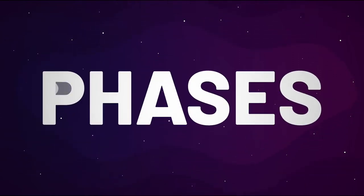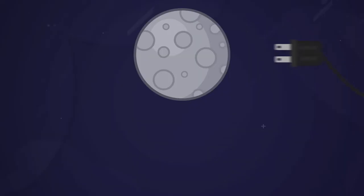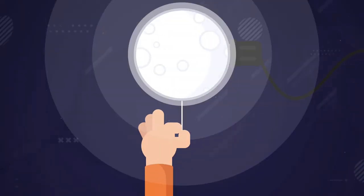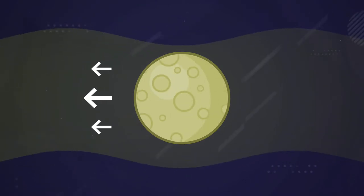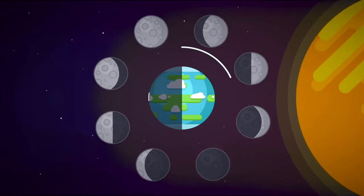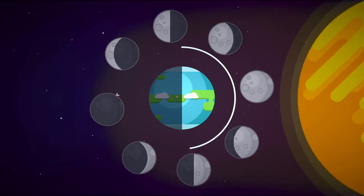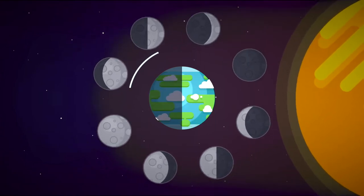Let's talk about those phases. Spoiler alert! The Moon doesn't actually create its own light. Its surface reflects the light from the Sun. But since the Sun, Earth, and the Moon are all in motion around each other, we see the Sun shining on the Moon from many different angles.